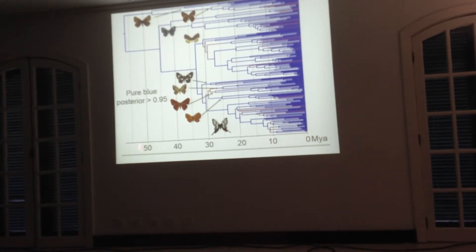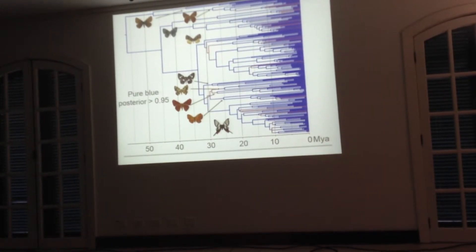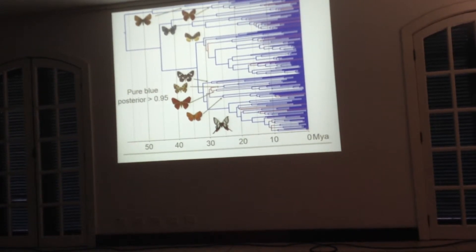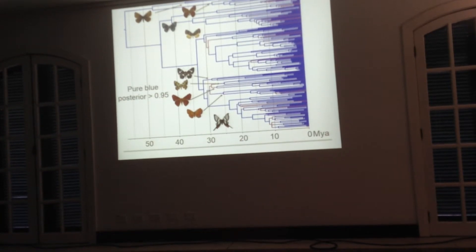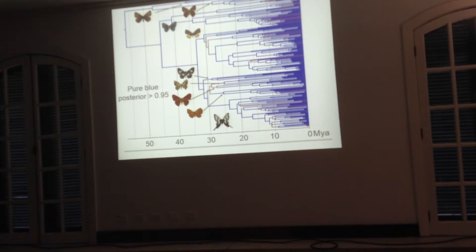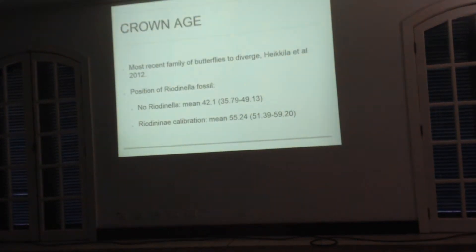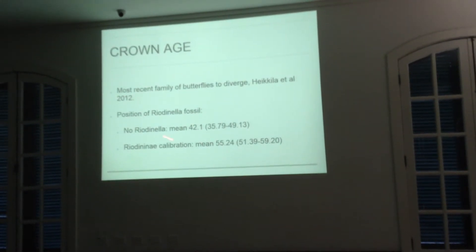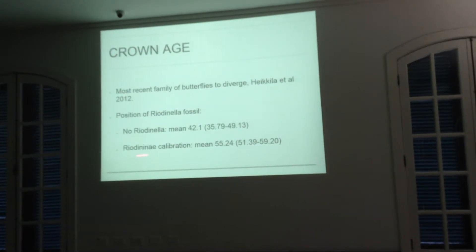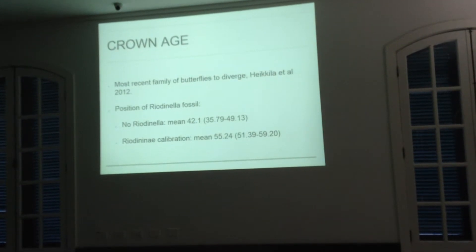Here we have the dating results. This butterfly family is around 55 to 56 million years old, which is very recent for butterflies — butterflies are mainly diverging during the Cretaceous. This is the most recent family of butterflies known to date. We also tested the position of the previously uncertain fossil, and our new assessment is that it belongs to the Riodinidae crown. The fossil does make a significant difference in the dating of the crown age.